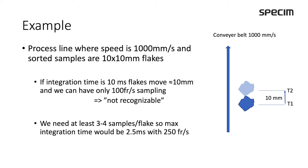Here is an example. We have a process line where the speed is about 1000 millimeters per second, and we assume we have quite small samples that we need to identify and sort — flakes of the size 10 by 10 millimeters. If the frame integration time is 10 milliseconds, it means that during this integration time the flake will move about 10 millimeters from position t1 to position t2. Because we have only 100 frames per second, we would get only one or even less than one sample per flake — meaning we cannot recognize the flake. In practice we need at least three to four samples per flake.